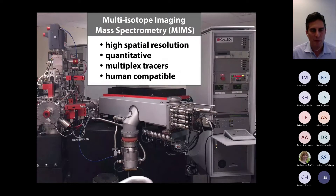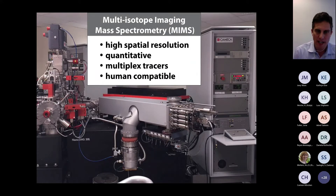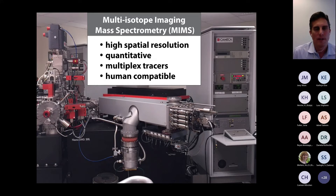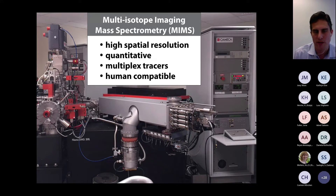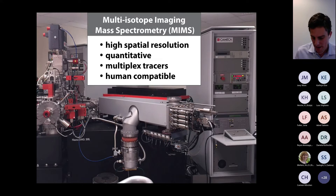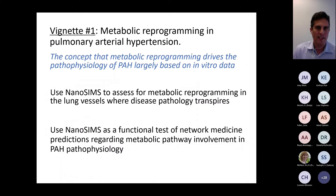Each pixel in one of these images is an individual isotope ratio measurement. The blue end of the scale is set to natural abundance, indicating no tracer enrichment, while rainbow colors indicate different degrees of enrichment. To summarize, the power of MIMS is attributable to its high spatial resolution—below 50 nanometers lateral at best—its quantitative nature, the ability to use multiplex tracers within the same experiment, and building on the long history of stable isotope tracers, it is entirely human-compatible.